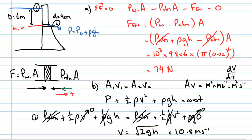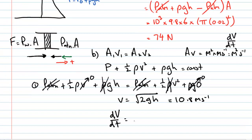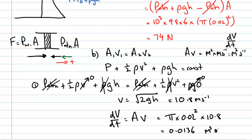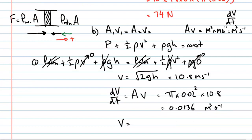We need the volume of water that exits after three hours, not just the velocity. Using the continuity equation, the volume flow rate is area times velocity: π × (0.02)² × 10.8 = 0.0136 m³/s. Multiplying by time: 0.0136 × 3 × 60 × 60 = 147 metres cubed of fluid.